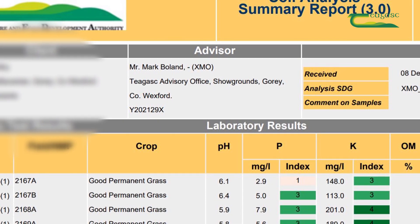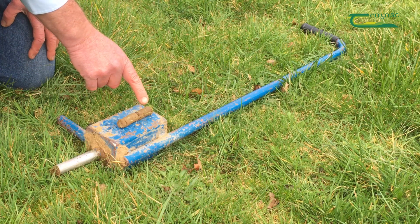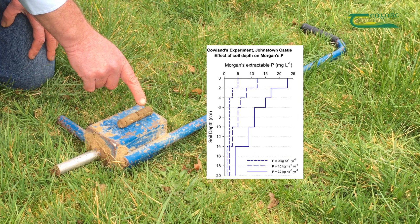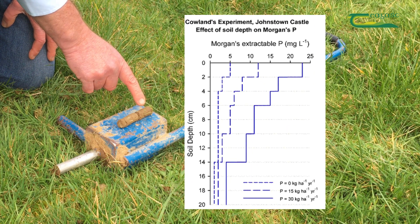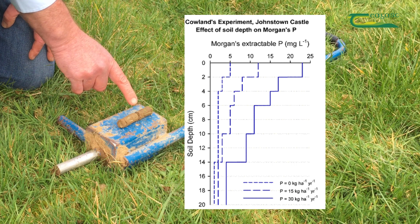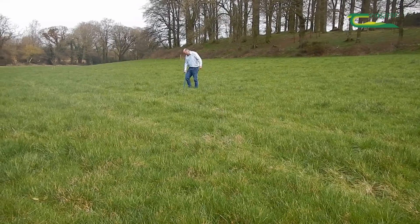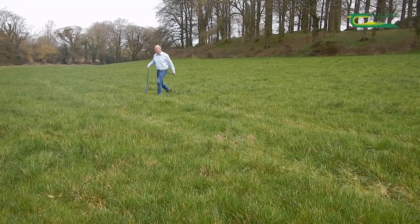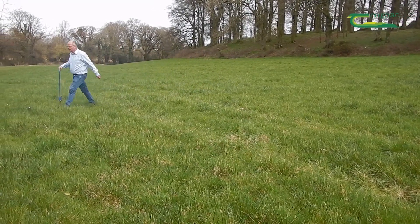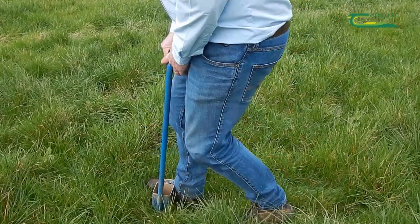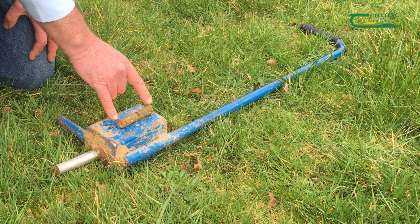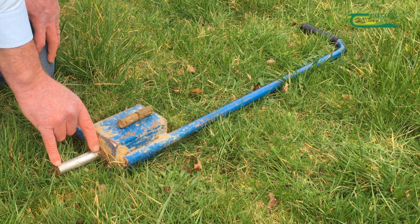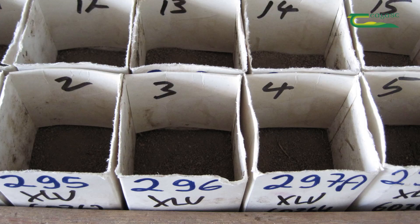On well-fertilised grassland, phosphorus will accumulate close to the surface of the soil, and it could well happen that the amount of phosphorus in the top inch or two centimetres would be three times higher than what it is at eight, nine or ten centimetres of depth. So it is important if you're taking soil samples in grassland that you take the sample to the proper depth of four inches or ten centimetres, otherwise you will get an inaccurate reading.